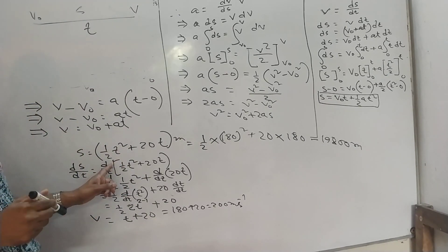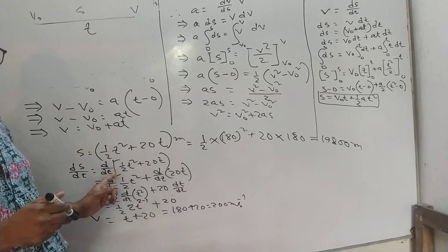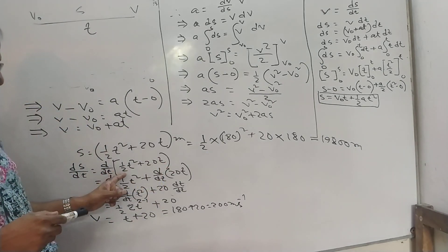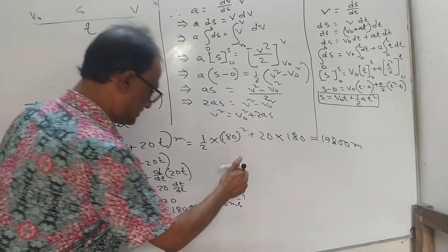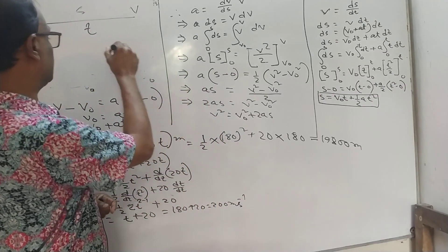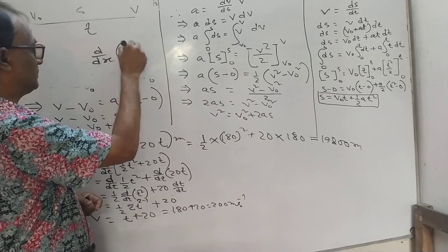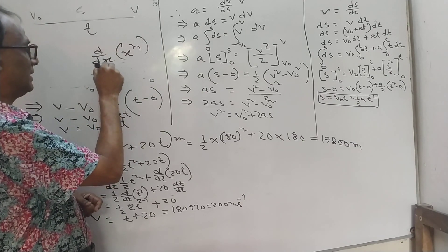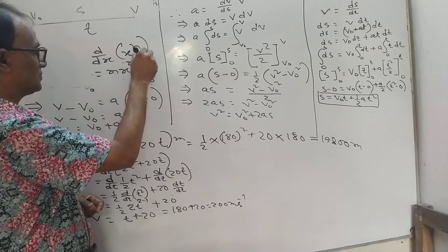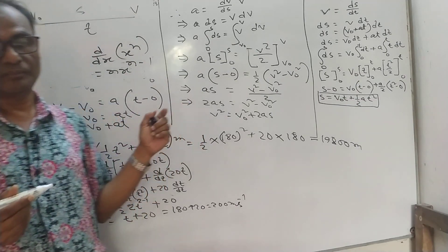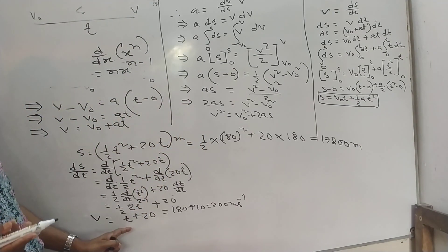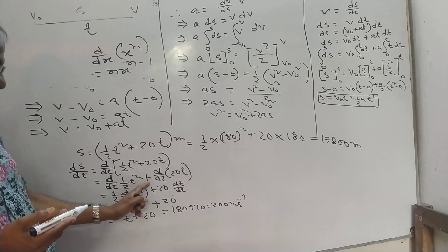The differentiation rule that is nx to the power n minus 1, that is d by dx x to the power n equals n x to the power n minus 1. This formula has been applied here.